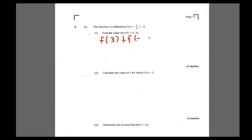We're going to substitute x = 3 to get f(3) = 1 over (3 times 3), which is 1 over 1. Then 1 minus 2 is negative 1. So f(3) = negative 1. Now we add f(-3).